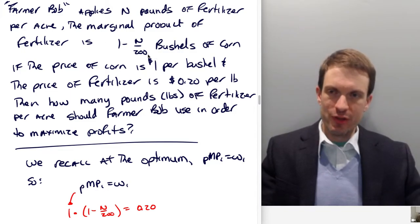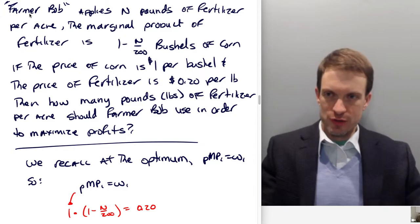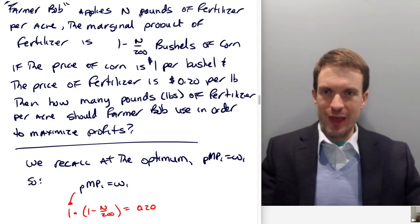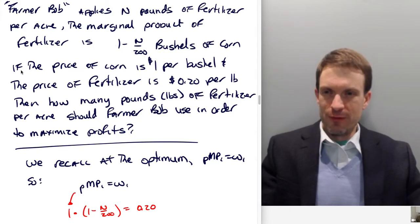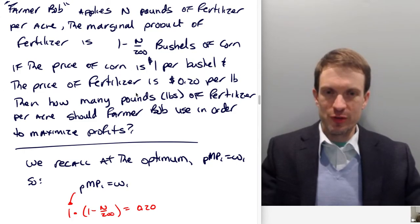So, the setup: Farmer Bob applies N pounds of fertilizer per acre. The marginal product of fertilizer is 1 minus N over 200 bushels of corn. If the price of corn is $1 per bushel and the price of fertilizer is $0.20 per pound, then how many pounds of fertilizer per acre should Farmer Bob use in order to maximize profits?